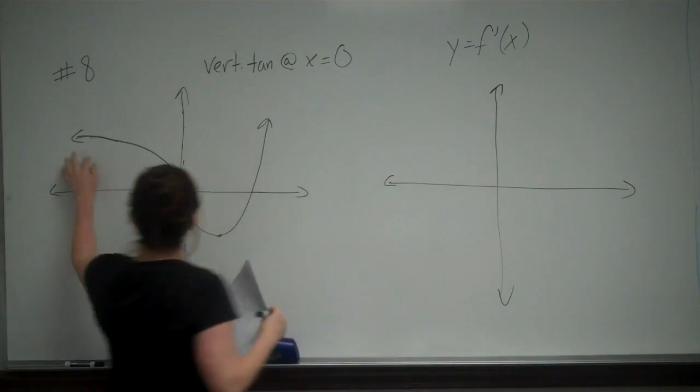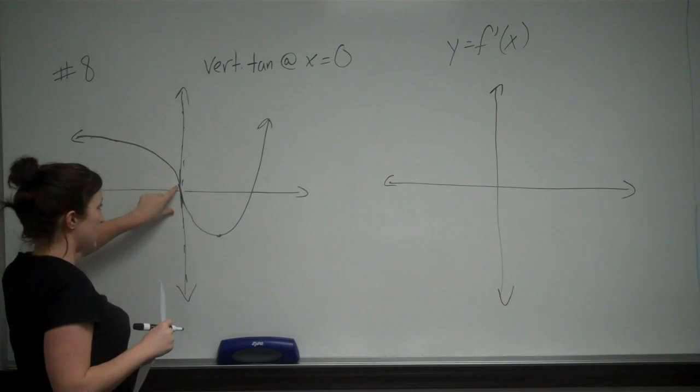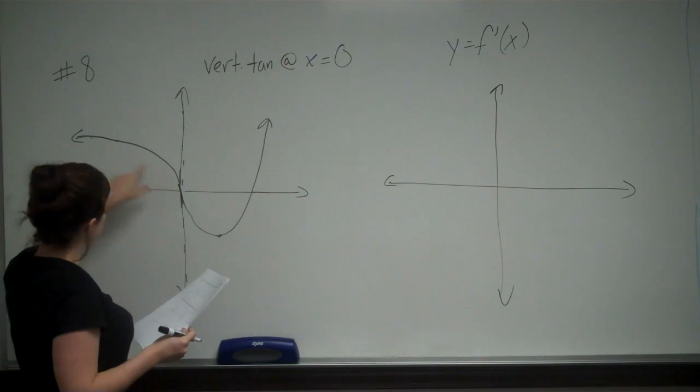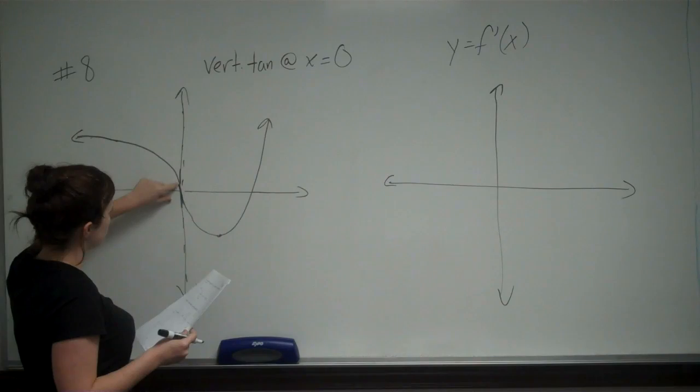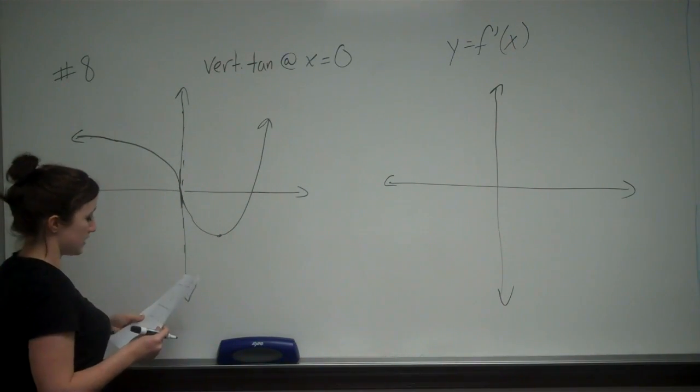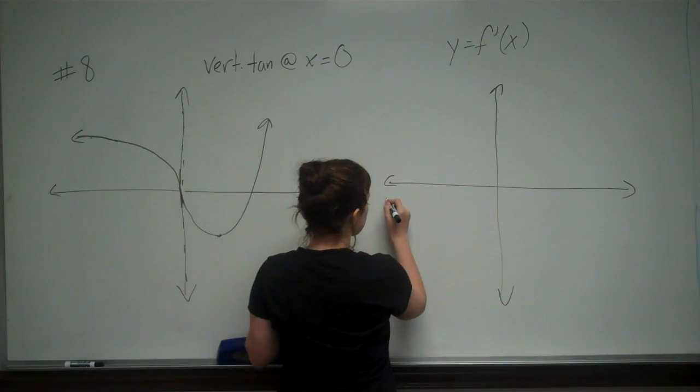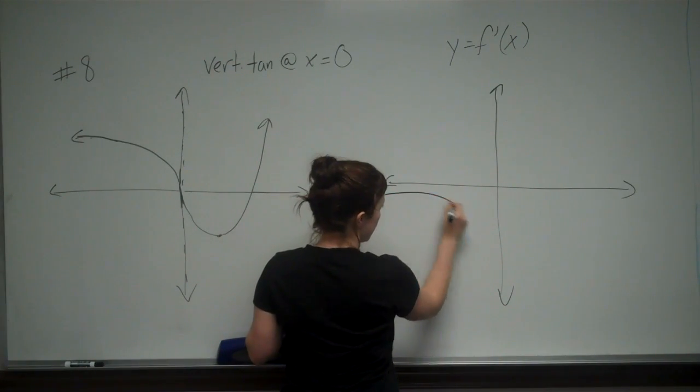So as you can see, from negative infinity until 0, we've got a negative slope. And as you can see, as we get closer and closer to 0, our slope is getting more and more negative. It's getting steeper and steeper. So this side is going to look like this.